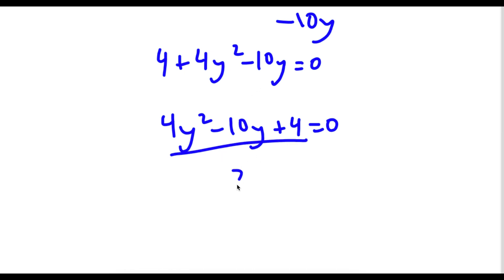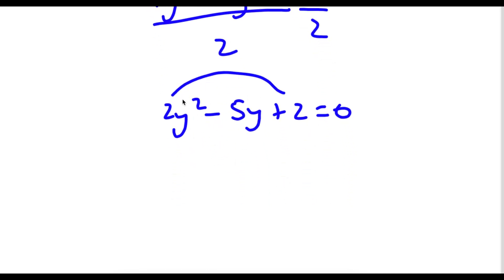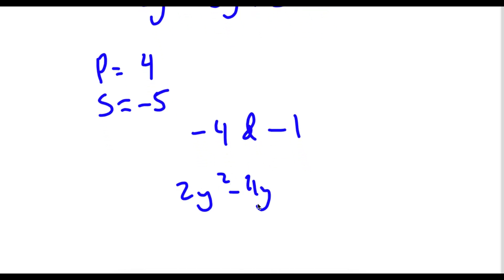I can divide both sides by 2: 2y squared minus 5y plus 2 equals 0. Now I need two numbers with a product of 2 times 2, which is 4, and a sum of negative 5. Those numbers are negative 4 and negative 1, since negative 4 times negative 1 is 4 and negative 4 plus negative 1 is negative 5. So I rewrite the middle term: 2y squared minus 4y minus y plus 2 equals 0.